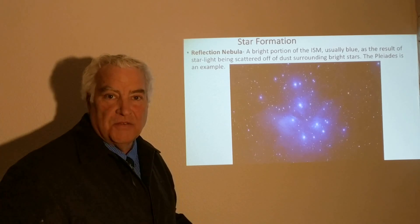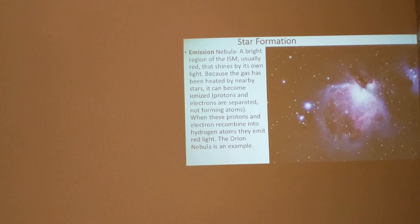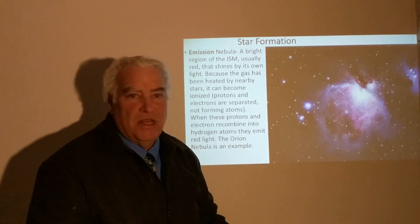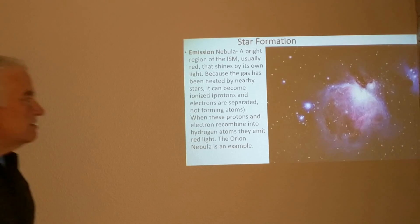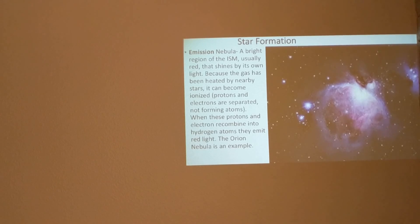Another kind of nebula is the emission nebula — a bright region of the interstellar medium, very often red because of hydrogen, shining by its own light. Nearby stars heat up the gas, ionizing it and separating the protons and electrons. When the protons and electrons recombine back into hydrogen atoms, they emit red light. The Orion Nebula is an example and can be seen with a small telescope.